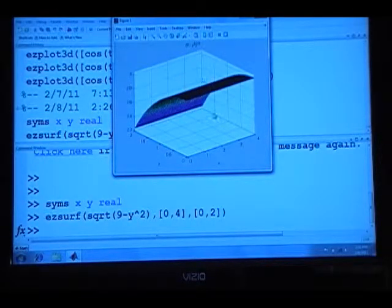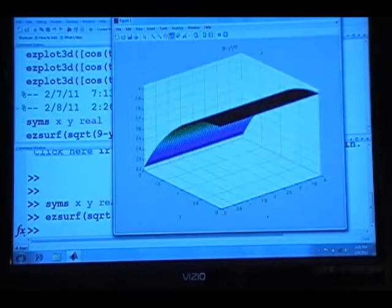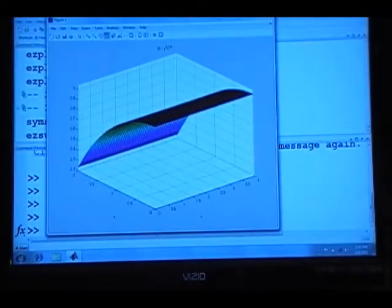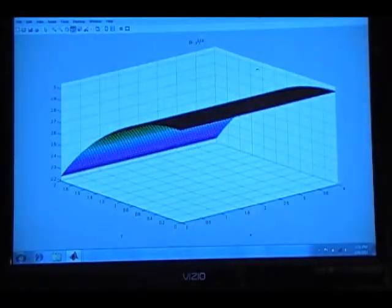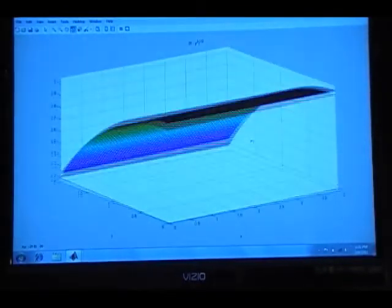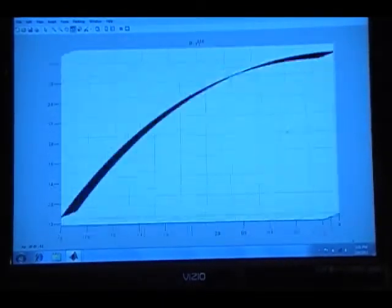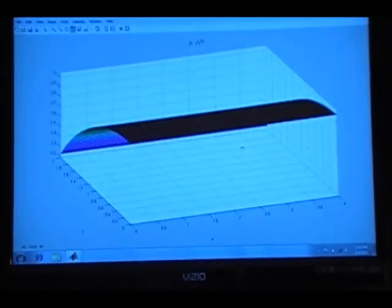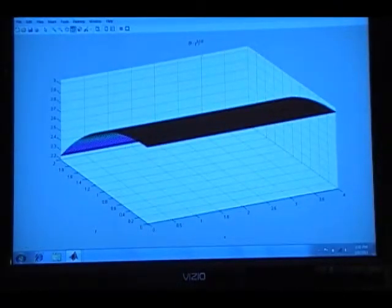And we can look at it from different perspectives. If you touch the rotate thing there, and I'll make sure we get that right. Maybe it's that one. Trying to remember how we can grab it and rotate it around here. Neither one seems to be working right now. Make it a little larger. Make it full screen if we want to. And now it's working. So we can just look at the surface from different perspectives if there's some advantage to doing that.